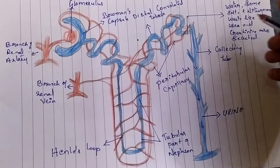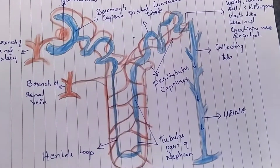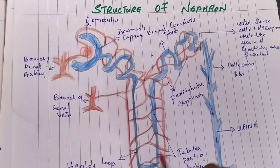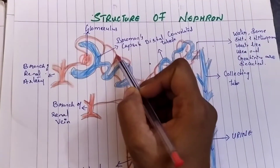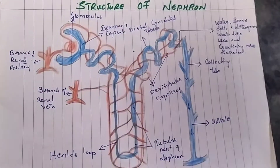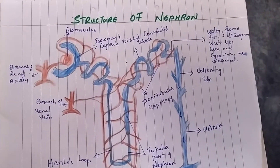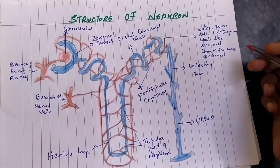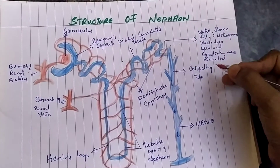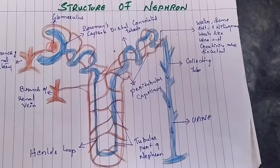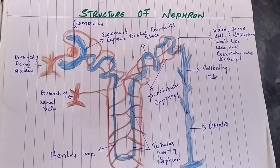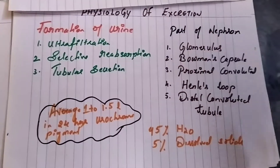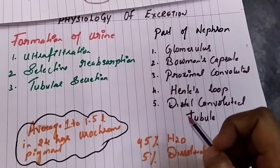All of this takes place in the nephron — ultra filtration of blood through the glomerulus and reabsorption in the corpuscles. Just have a look at the structure of the nephron in detail, where you can see how water, some salts, and nitrogenous waste like urea and creatinine are secreted out, and at the collecting tube where urine is excreted. You can see the important parts of the nephron which need to be remembered.